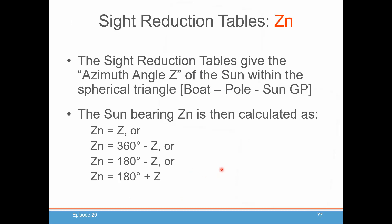In today's episode, we are going to dive right into the site reduction tables and pull out our first piece of data that's going to help us determine where we are on the Earth, which is the azimuth angle Z and the sun's bearing angle Zn. The site reduction tables help us find Zn, the direction of our celestial objects from north from where we are on our boat. Angle Z is the angle of the sun within the spherical triangle that we studied last week — that triangle that goes from the boat to the closest pole to the sun's GP and back to the boat.